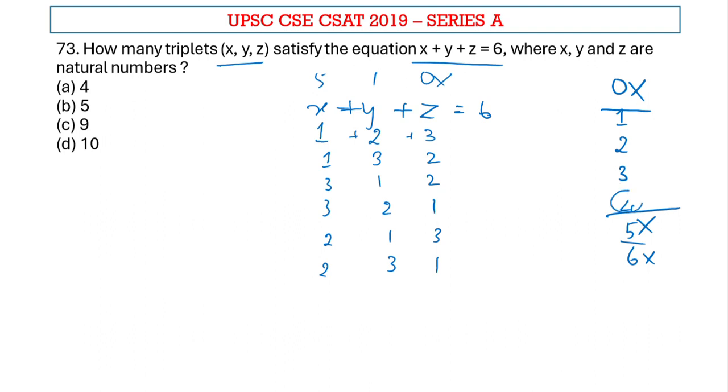So the next combination would be to use 4. If I am using 4, the other values should be 1 and 1. So now if I am interchanging these, I will get 1, 4, 1 and 1, 1, 4.